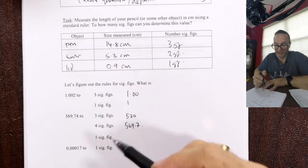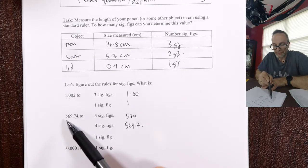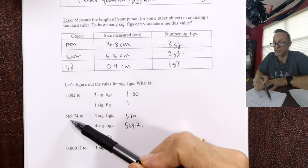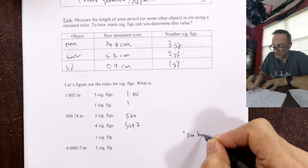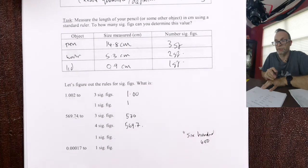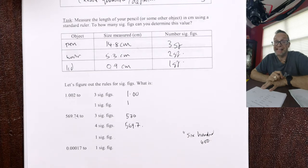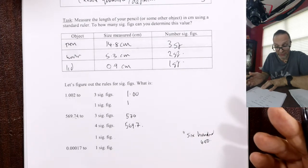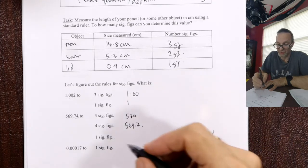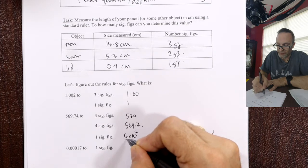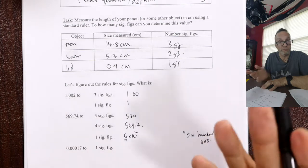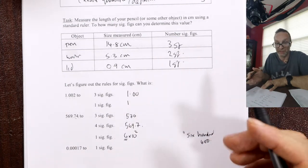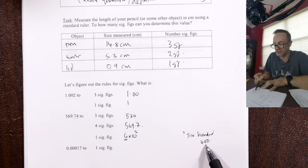Where things fall apart: one significant figure for a number like 569.74 rounds to 600, but writing '600' as a plain number has three digits — that's not one significant figure. In high school they taught you to put a decimal point after, but we don't do that in science. The get-out-of-jail-free card is scientific notation: 600 to 1 significant figure is 6 times 10 to the 2. 6.0 would be 2 sig figs, 6.00 would be 3 — six by itself is one significant figure.